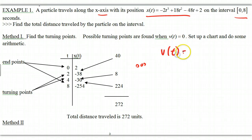We want when the velocity is equal to 0. So we go ahead and find the velocity function, which would be -6t² + 36t - 48. And if we solve this out, when we set this equal to 0, we'll get t equal to 2 and 4. These are our possible turning points.